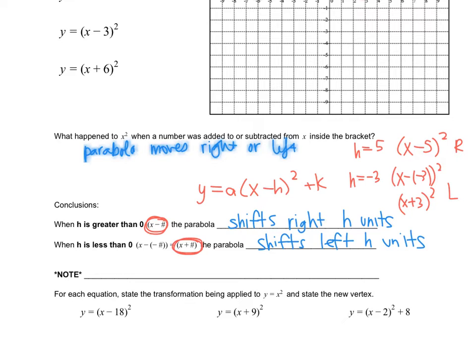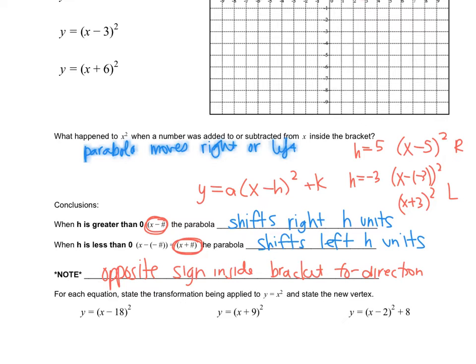Leave a space here to write a note for yourself. Inside the bracket, it's the opposite direction — opposite sign inside bracket for direction. Write whatever makes sense to you as a reminder that inside the brackets, it's the opposite of what you might logically think, and that's because of the setup of vertex form.